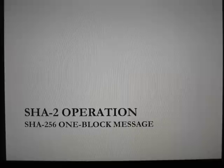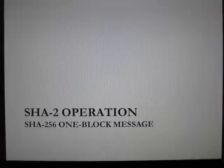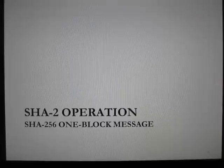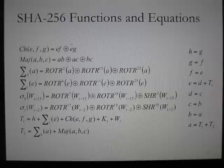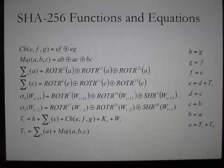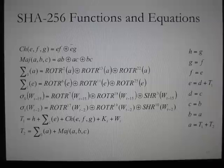Since the algorithms have the same structure, SHA-256 will be used to illustrate the operation of a secure hash algorithm. For this illustration, a one-block message of 512 bits for SHA-256 will be used as input. The SHA-256 algorithm makes use of the following functions and equations for hash computation: CH, MAJ, big and small sigma, and working variables T1 and T2, all operating on 32-bit words.